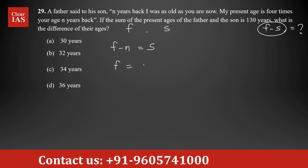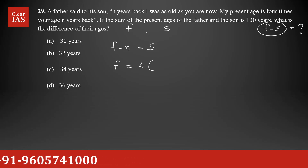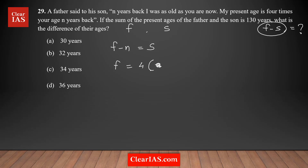The second equation: 'My present age is four times your age n years back.' The son's age n years back is s minus n, so f equals 4 times (s minus n). The third equation from 'the sum of the present ages is 130' gives us f plus s equals 130. So we have three equations and three unknowns: f, s, and n.